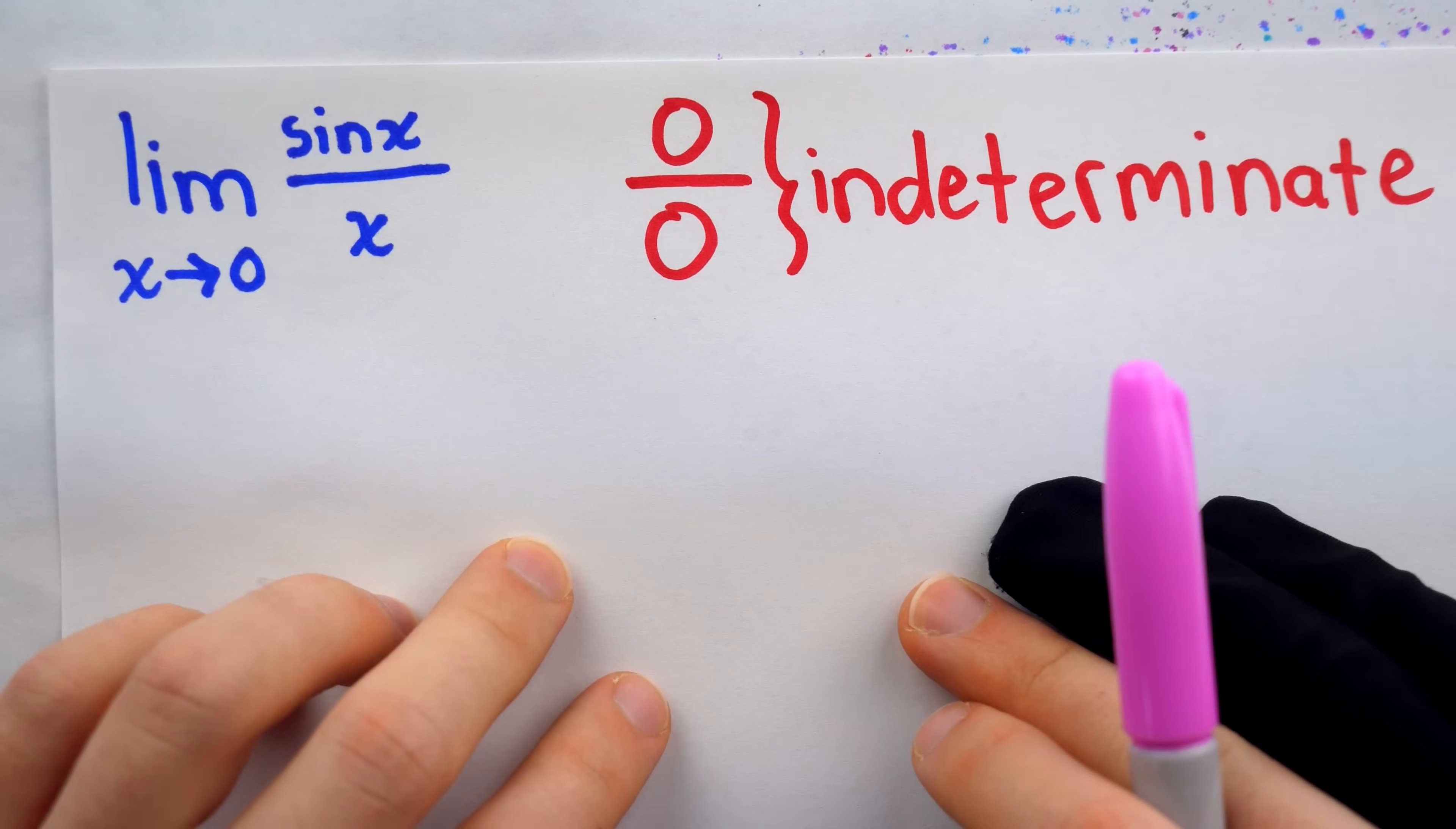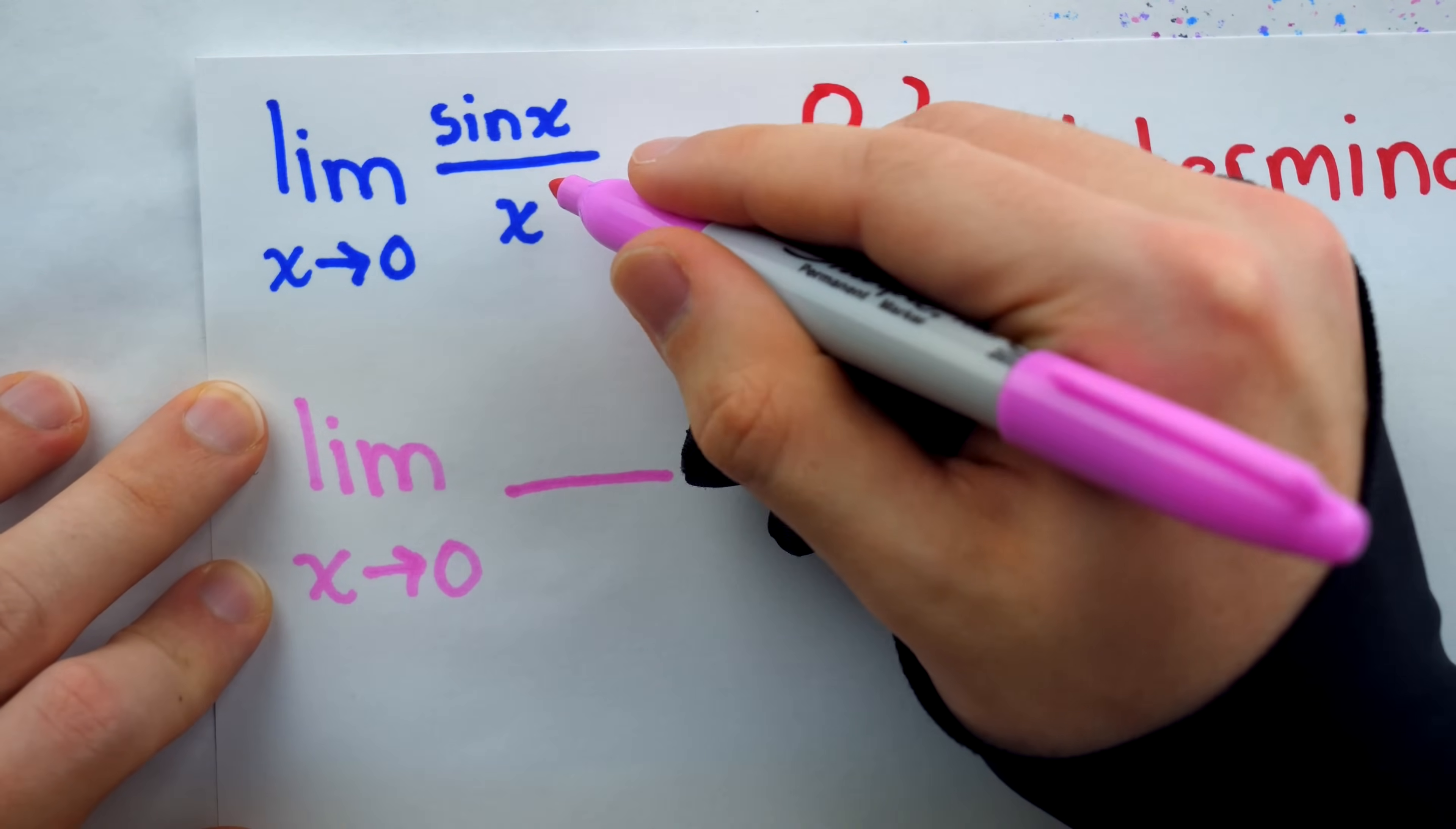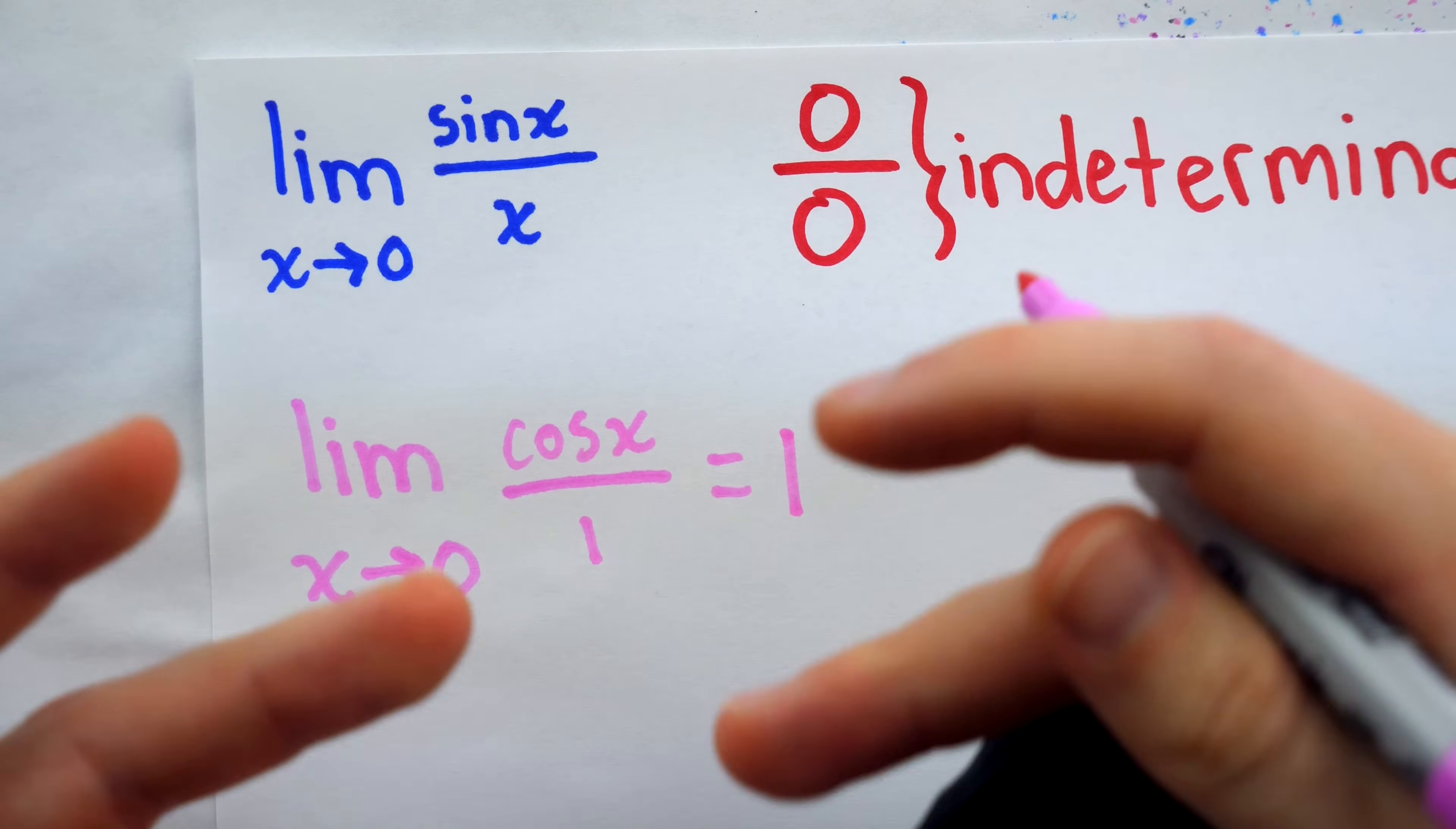Early on in a calculus course, students will usually go through a geometric proof that this limit is actually equal to one. You can also find the value of the limit by applying what's called L'Hopital's rule. L'Hopital's rule tells us that when we have an indeterminate form like this, we can evaluate the limit by taking the derivative of the numerator and denominator. The derivative of sine x is cosine x, and the derivative of x is one. And at this point, we can plug in zero directly without any issues. Cosine of zero is one, so it's just one over one, and we get the limit of one, which agrees with the geometric argument.